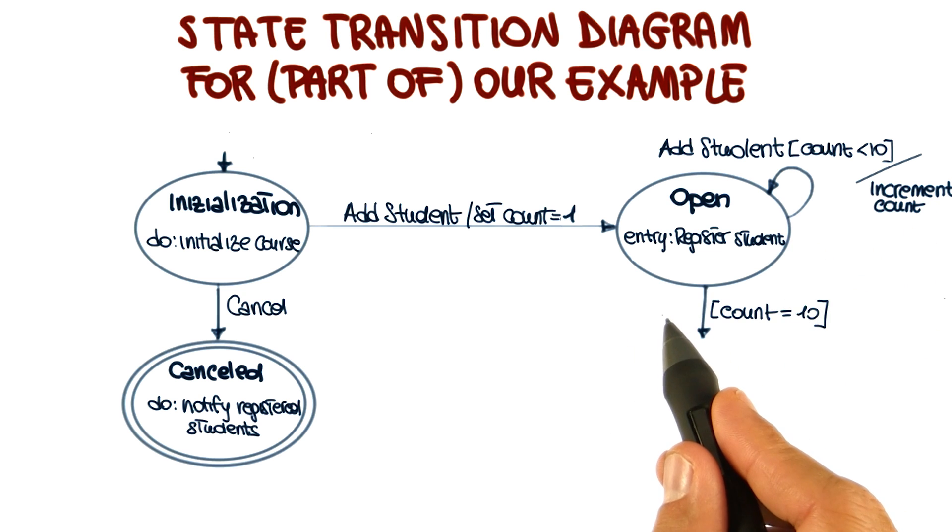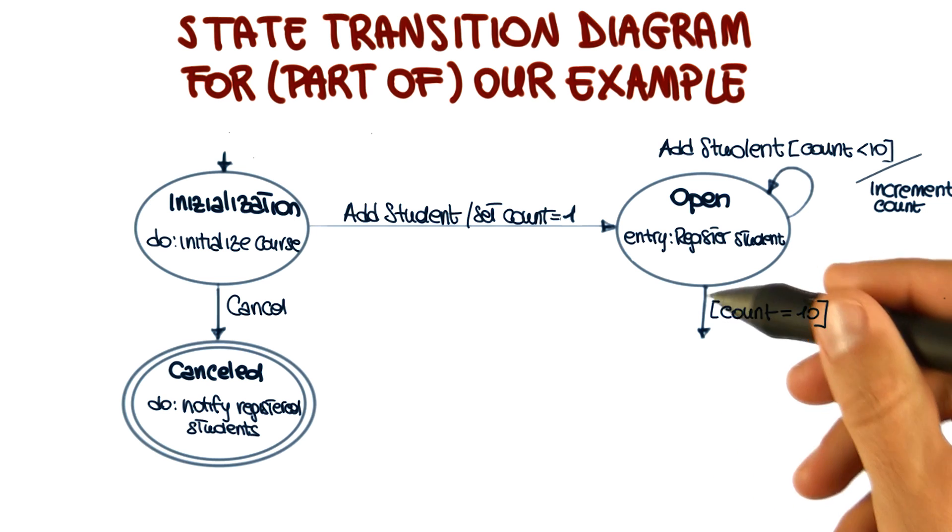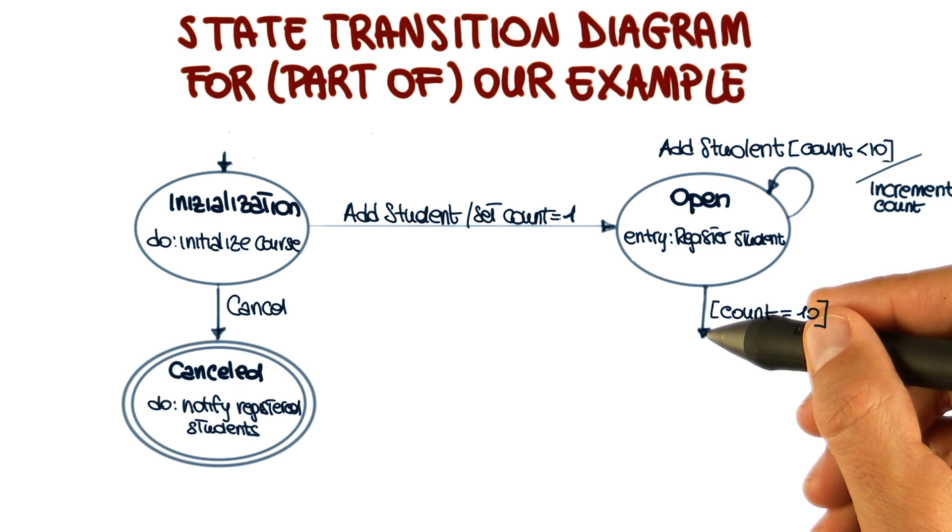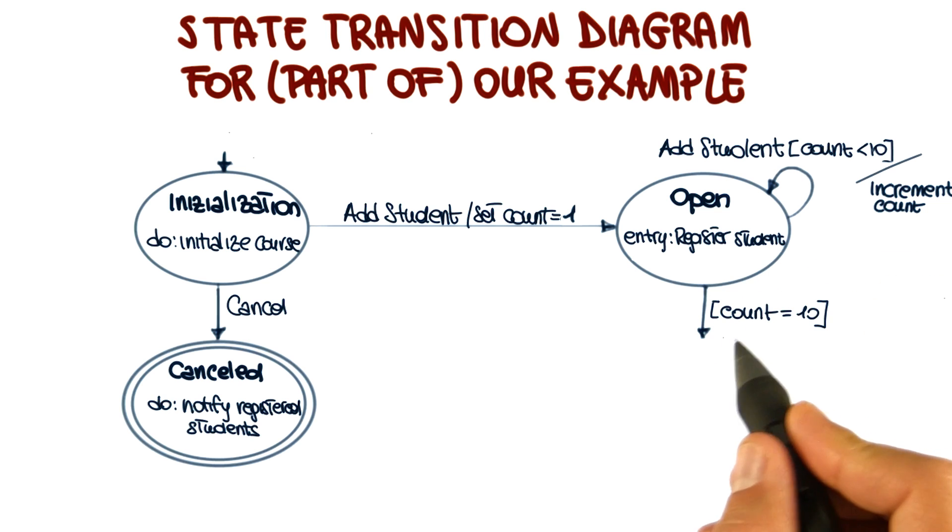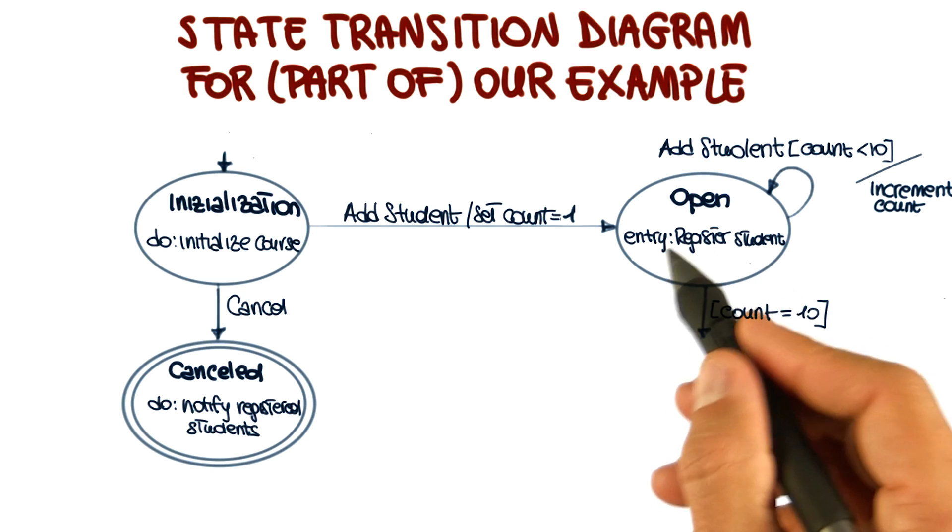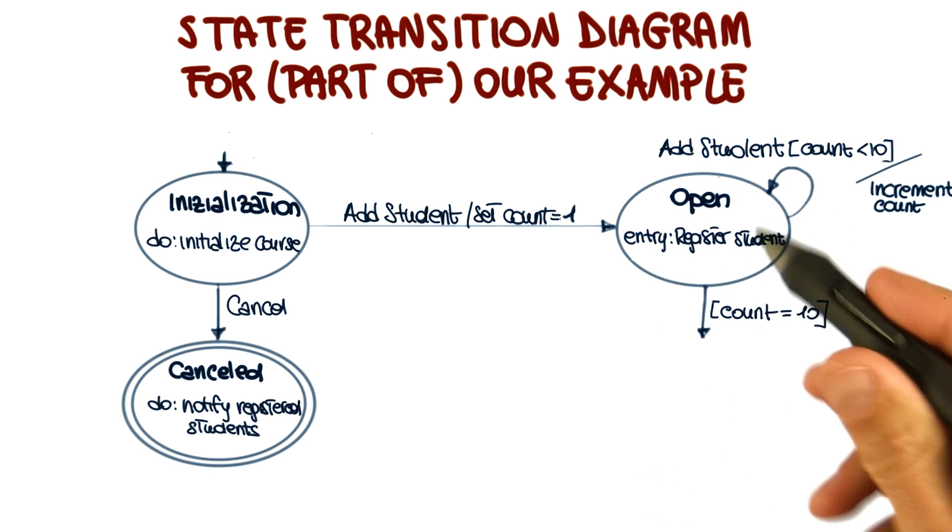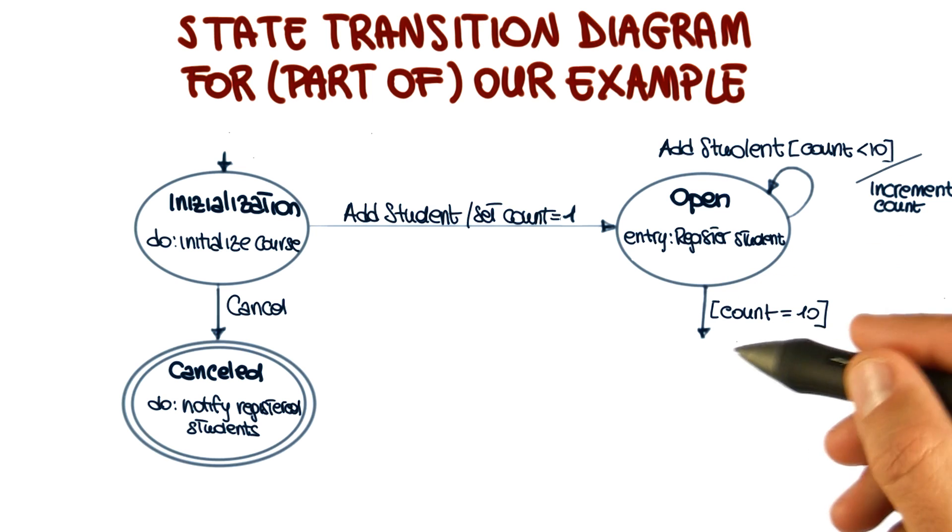Now here we have an interesting transition, because there's no event triggering the transition, but simply the fact that the count is equal to 10. You can imagine this as being a transition that is always enabled, so can always be triggered, but will be guarded by the fact that the count has to be exactly 10. Basically, this transition will take place only when enough students are added such that the count is incremented and equals 10.